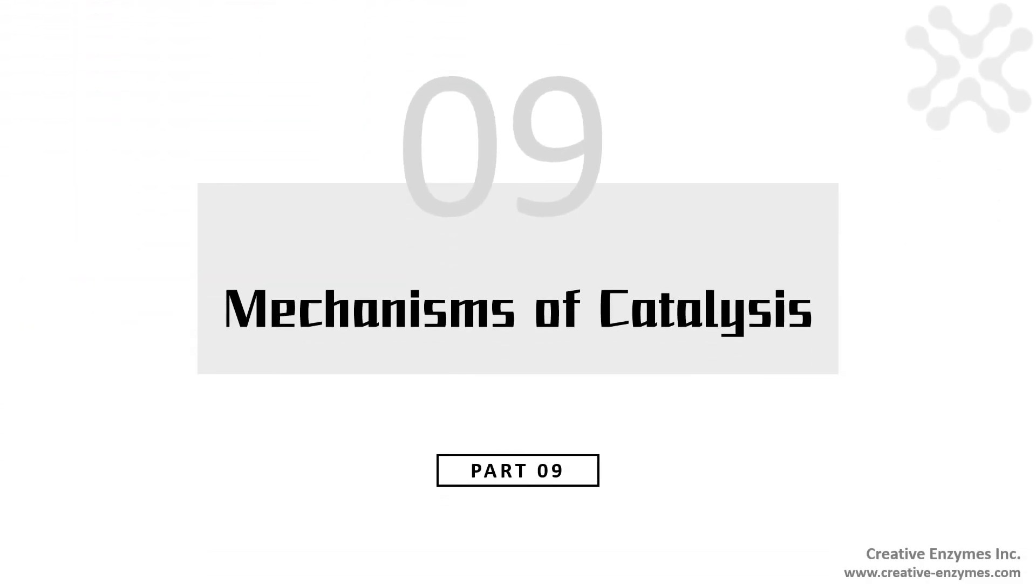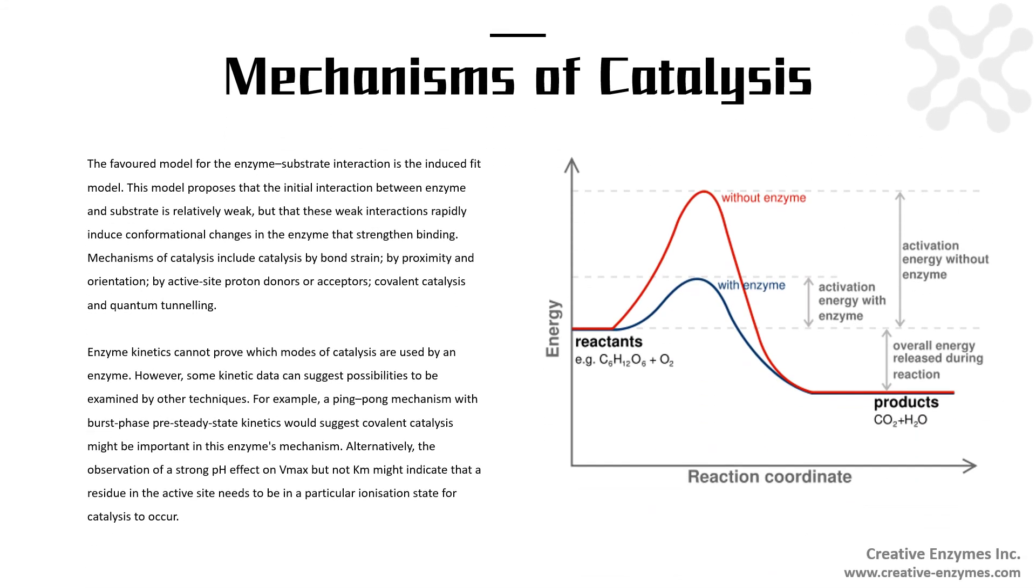Mechanisms of Catalysis. The favored model for the enzyme-substrate interaction is the induced fit model. This model proposes that initial interaction between enzyme and substrate is relatively weak, but these weak interactions rapidly induce conformational changes in the enzyme that strengthen binding. Mechanisms of catalysis include catalysis by bound strain, by proximity and orientation, by active site proton donors or acceptors, covalent catalysis and quantum tunneling.